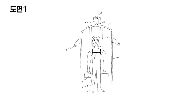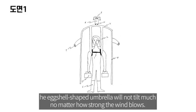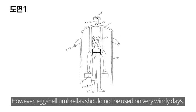Changes: If 4 pole straps connecting the waist and the wall of the umbrella are added, the egg-shaped umbrella will not tilt much, no matter how strong the wind blows. However, egg-shell umbrellas should not be used on very windy days.